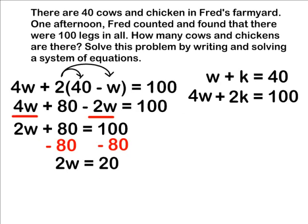We can see w must equal 10 because 2 times 10 equals 20. Let's divide both sides by 2 to complete our work. We're doing the opposite operation of multiplication, which is division.